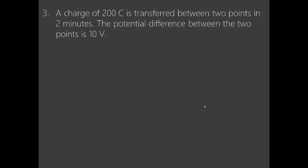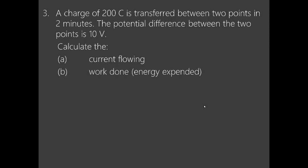Try this: A charge of 200 coulombs is transferred between two points in two minutes. The potential difference between the two points is 10 volts. Calculate (a) the current flowing, and (b) the work done or energy expended.